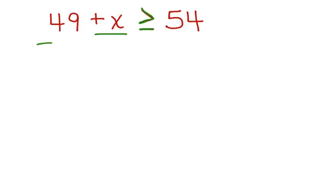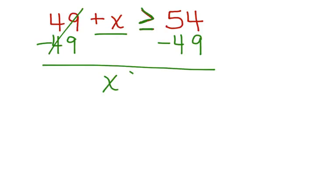First, let's subtract 49 from each side. These cancel, bring down the x. x is greater than or equal to 5. Kelly needs to grow at least 5 more inches in order to ride the Dragon of Death.